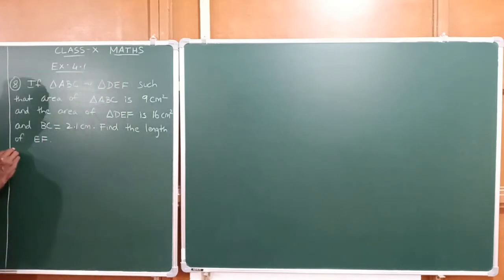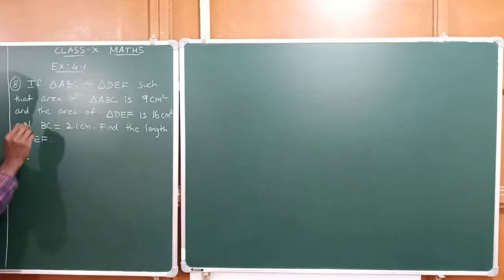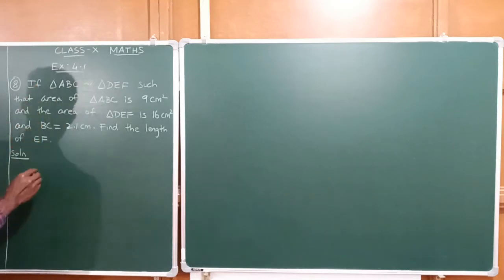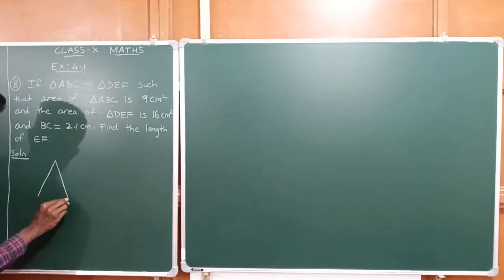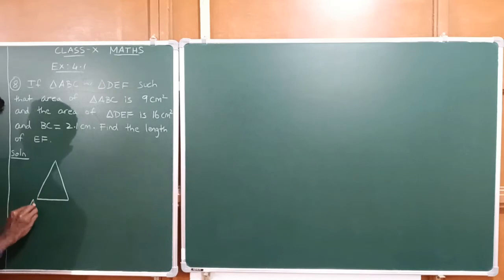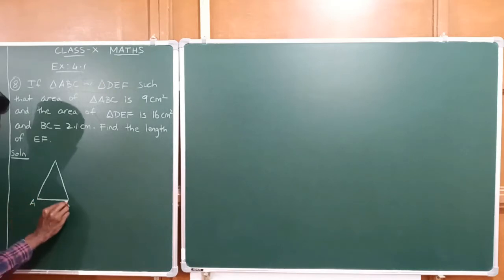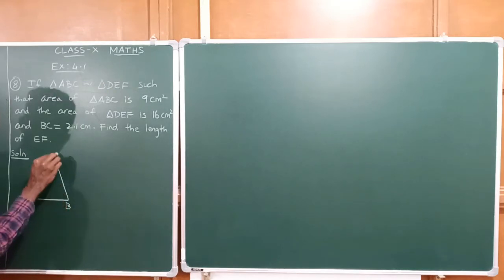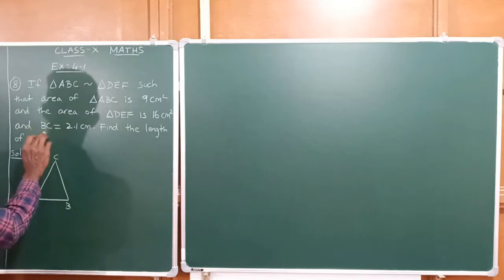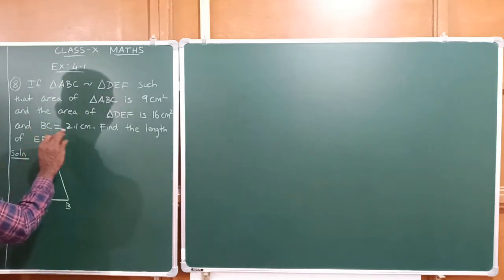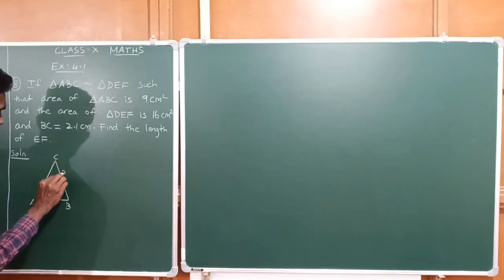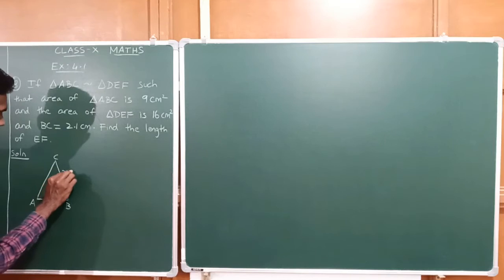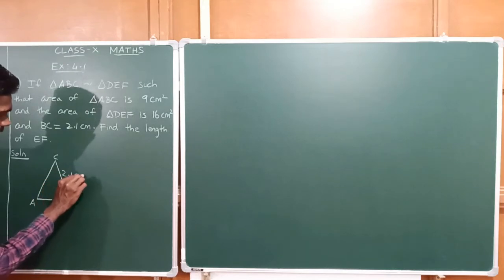Let us move to the solution. First we have a diagram with two triangles. This is triangle ABC, and BC is equal to 2.1 centimetre.